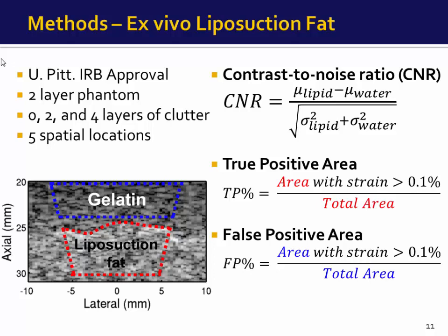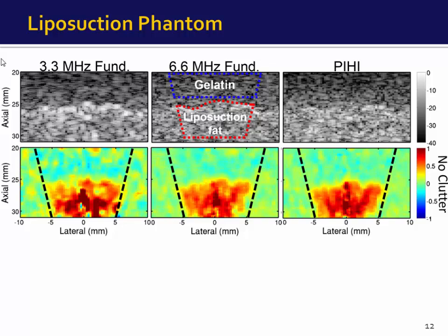Shown here from left to right are 3.3 MHz, 6.6 MHz, and pulse inversion data. The first row is B-mode and the second row is TSI data. We observe positive strain within the liposuction fat, as expected from a lipid-based tissue, and negative strain in the gelatin background, as expected from a water-based material.